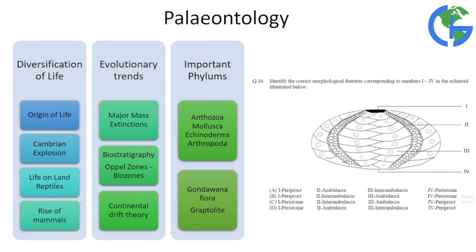Paleontology is a theoretical topic. It covers diversification of life including origin of life, the Cambrian explosion, life on land, reptiles, fall of dinosaurs, and rise of mammals. Evolutionary trends include major mass extinctions, biostratigraphy, and continental drift theory. Important phylums like Anthozoa and Mollusca are in the syllabus and cannot be ignored. Graptolite, Gondwana flora, Glossopteris, and Gangamopteris questions should also be very clear.